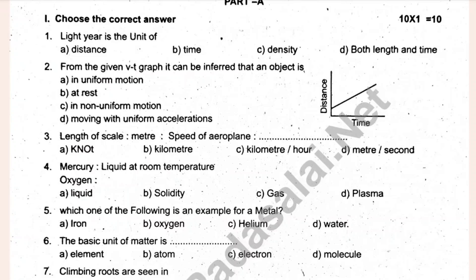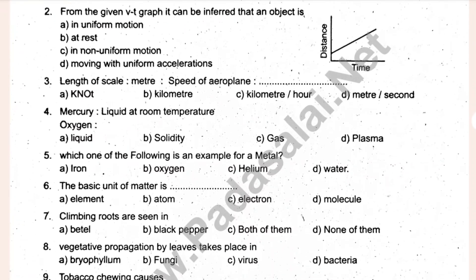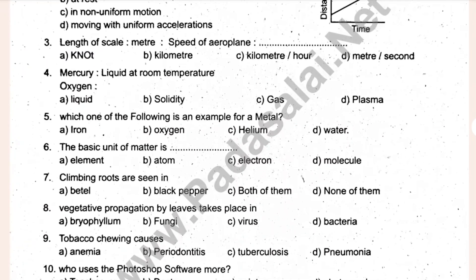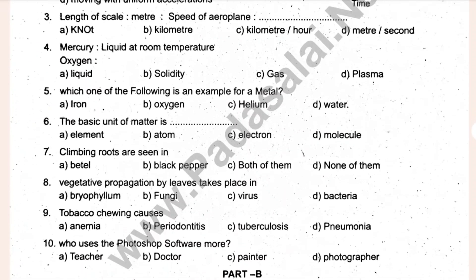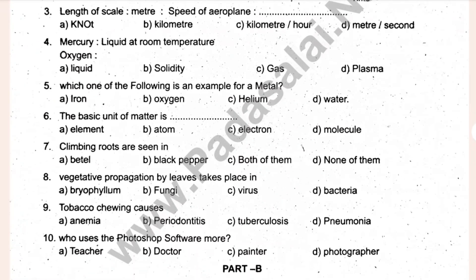Which one of the following is an example of metal? The basic unit of matter is dash. Climbing routes are seen in dash. Vegetative propagation by leaves takes place in dash. Tobacco chipping causes dash.